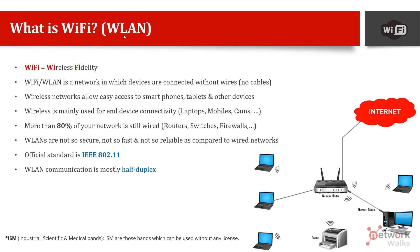Wi-Fi allows us to easily access our network without any cables. It is mainly used for end device connectivity — like laptops, mobile phones, security cameras, Wi-Fi printers, and smart TVs. However, it does not mean everything has gone wireless; most of our network infrastructure still stays connected through wires.